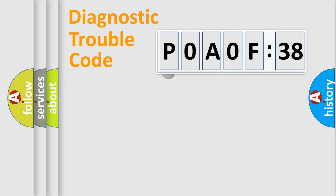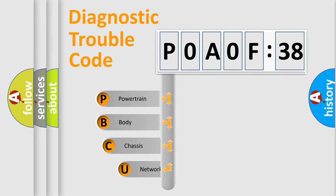Powertrain, Body, Chassis, Network. This distribution is defined in the first character code.